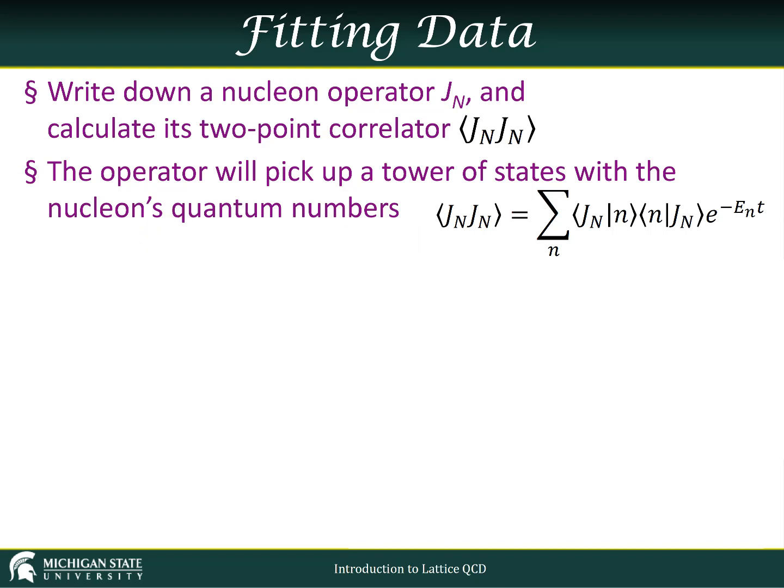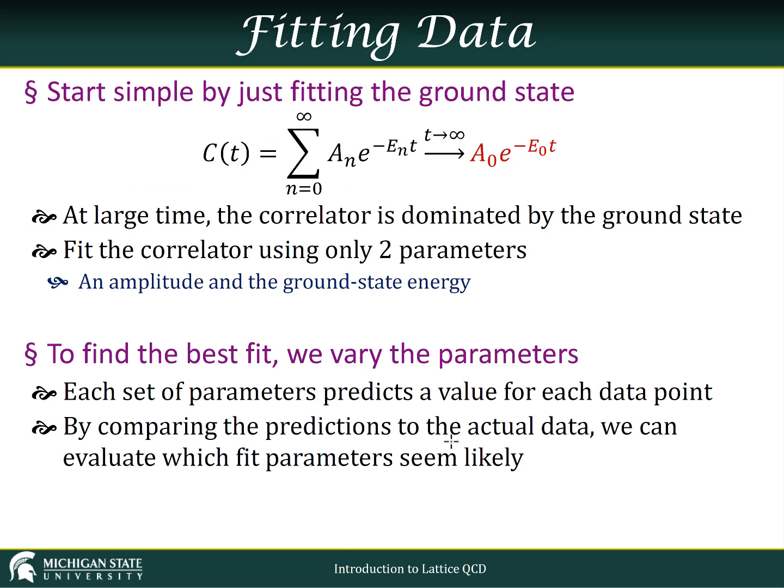So the goal is to fit the correlators to this form. Normally we're not going to use an infinite tower of states, that would be completely ridiculous because of course we only have a finite amount of data. In fact, because our data is so noisy, we're only going to be able to pull out one state, maybe two. It depends on what the quality of your data is. All right, so let's just talk about fitting just the ground state.